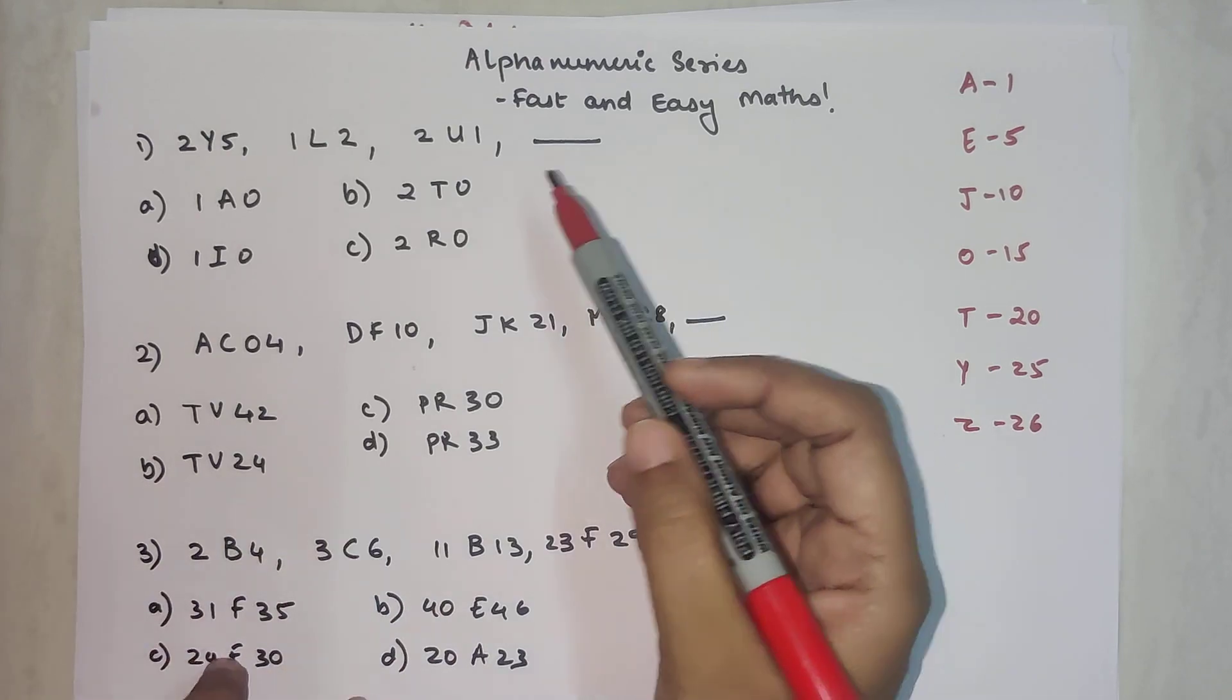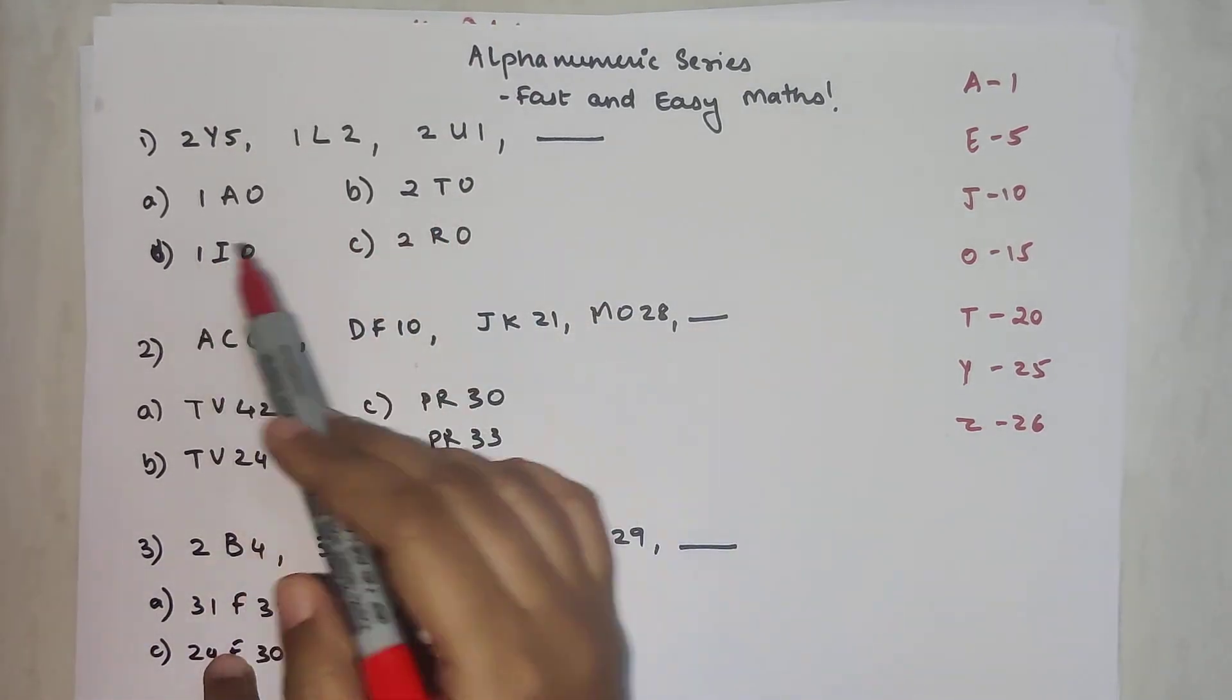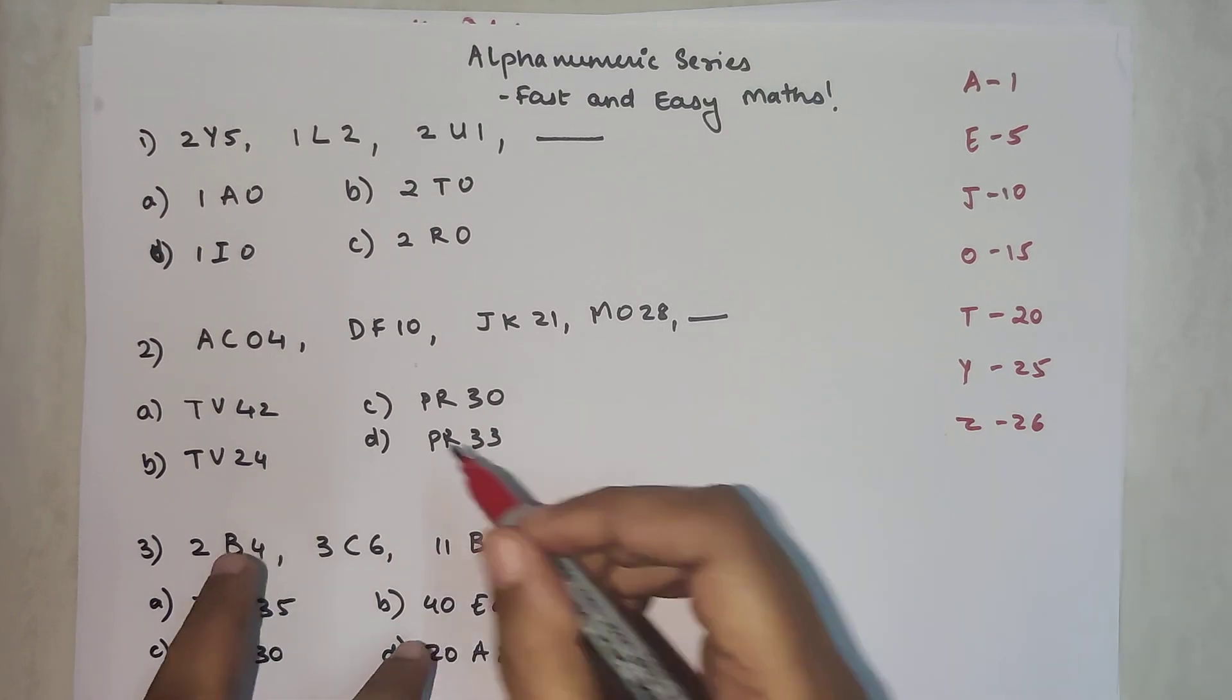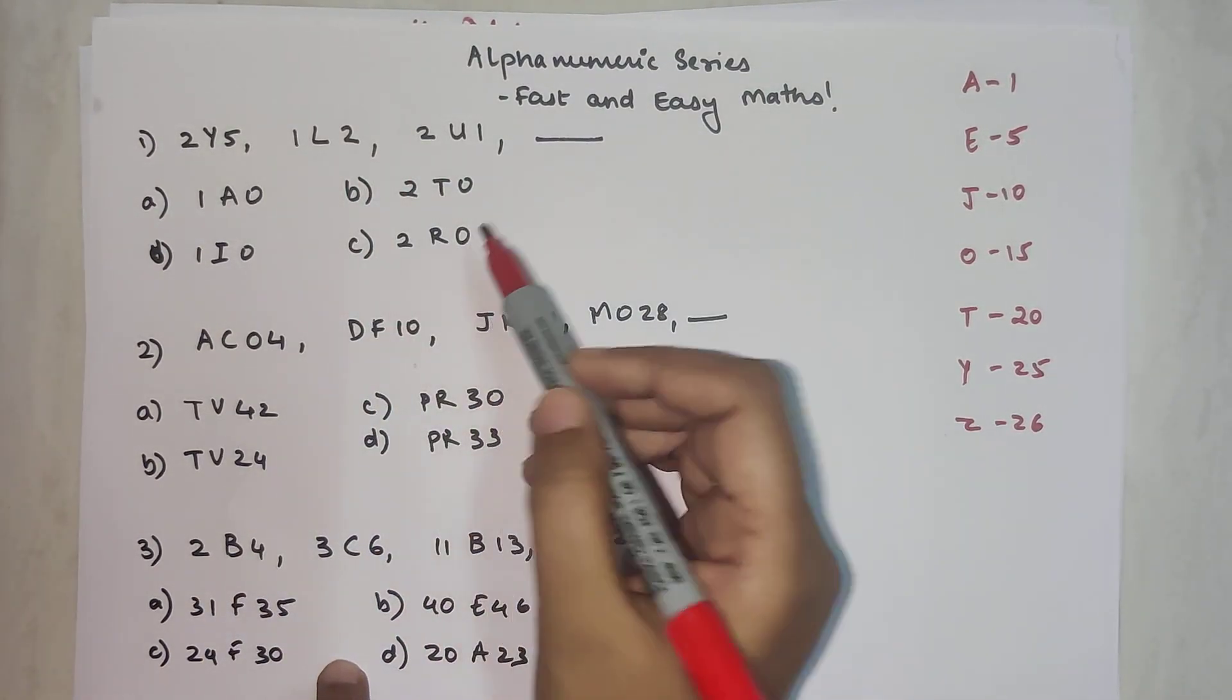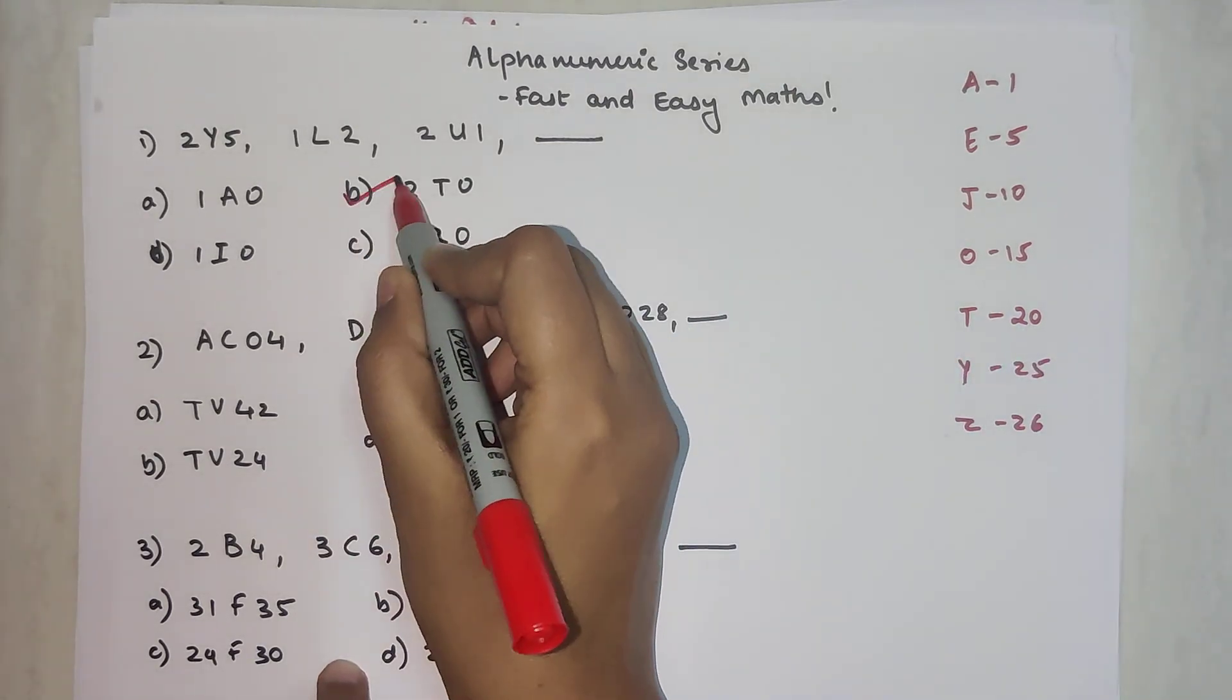Next, we should try to find out in the options which number is selecting, following this pattern. So two zero, that is twenty. So option B is your answer.